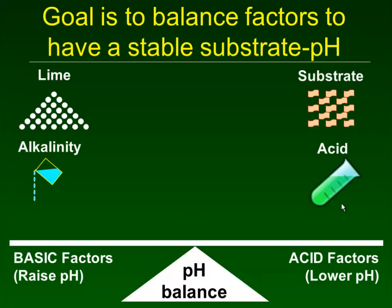The irrigation water alkalinity you can think of as dissolved limestone, and that will tend to push pH up over time. High alkalinity means that each time you water it's like you're applying lime to the substrate, and we can sometimes inject an acid like sulfuric acid to neutralize some of that water alkalinity.